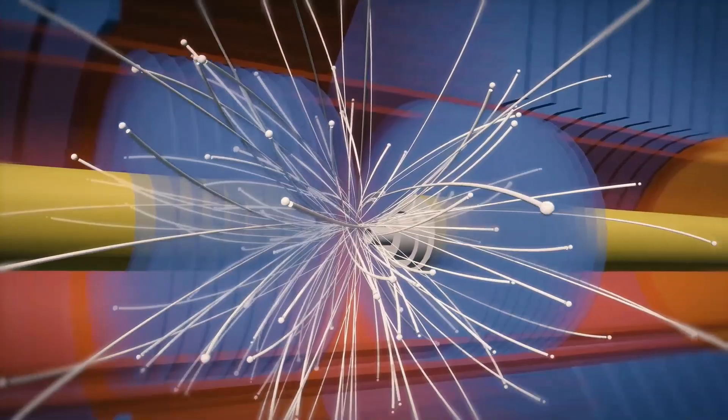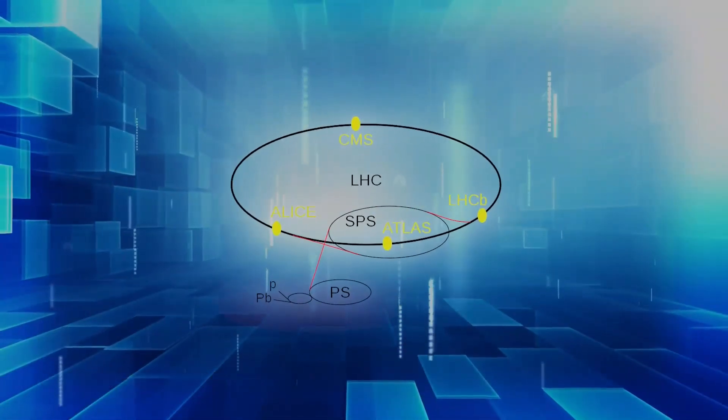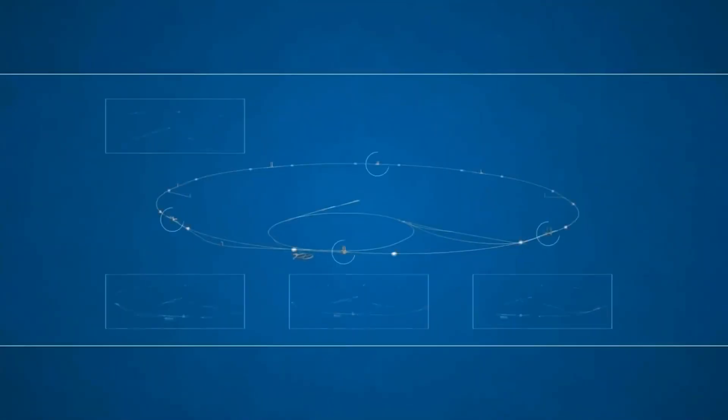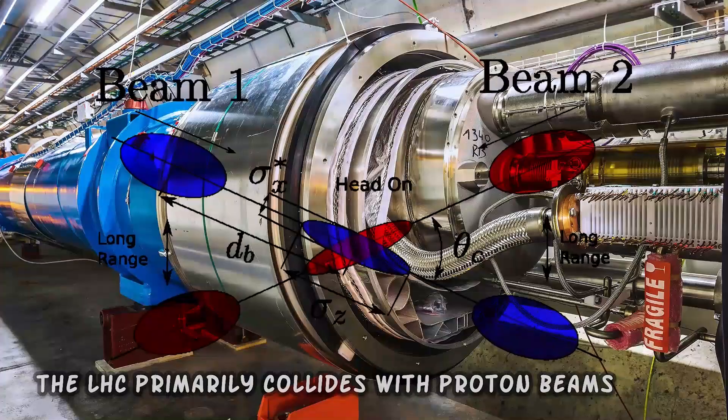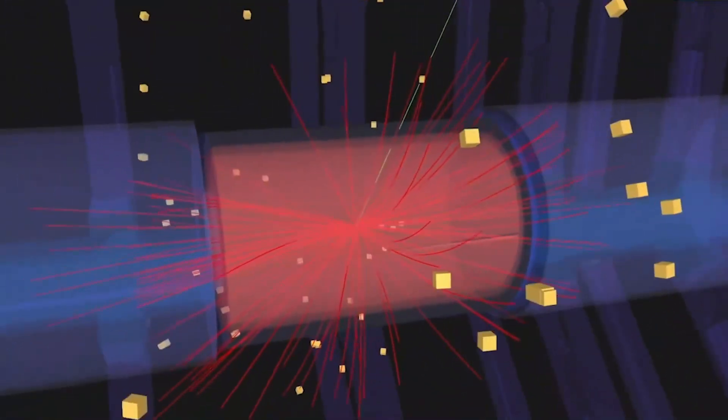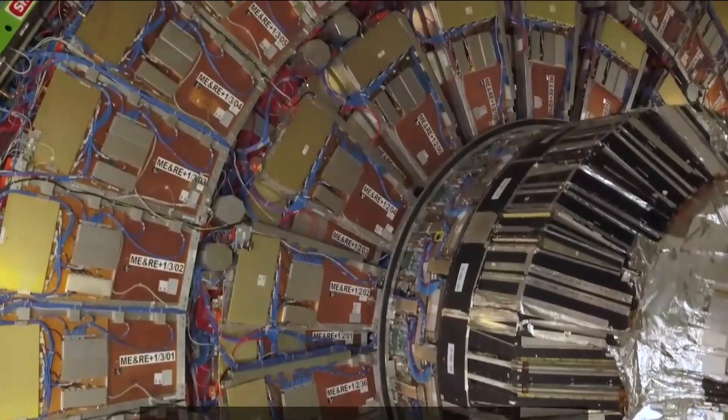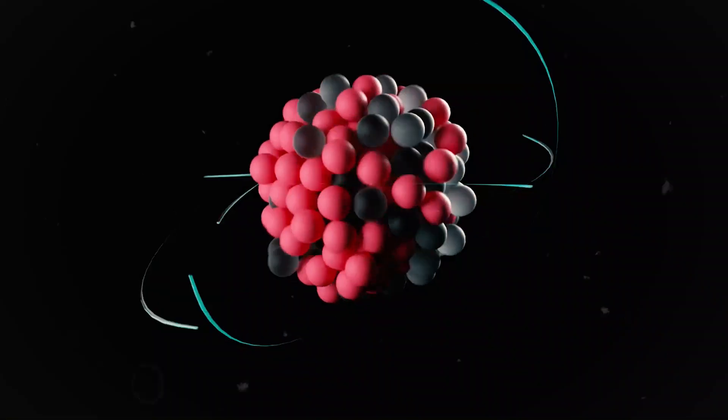The collider has four crossing points where the accelerated particles collide. Nine detectors, each designed to detect different phenomena, are positioned around the crossing points. The LHC primarily collides with proton beams, but it can also accelerate beams of heavy ions, such as in lead-lead collisions and proton-lead collisions.